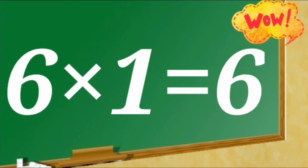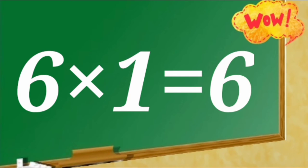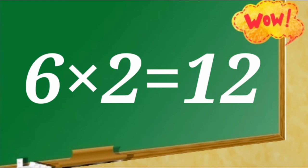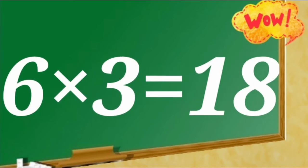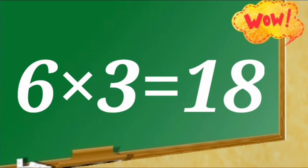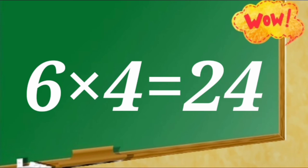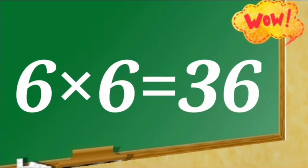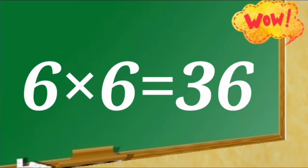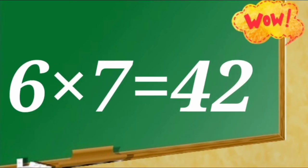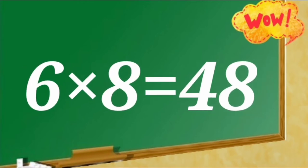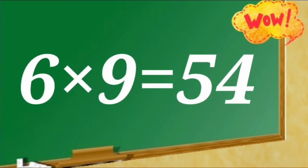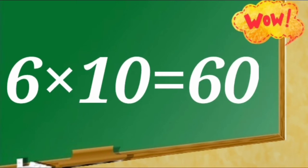Table of 6. 6 ones are 6, 6 twos are 12, 6 threes are 18, 6 fours are 24, 6 fives are 30, 6 sixes are 36, 6 sevens are 42, 6 eights are 48, 6 nines are 54, 6 tens are 60.